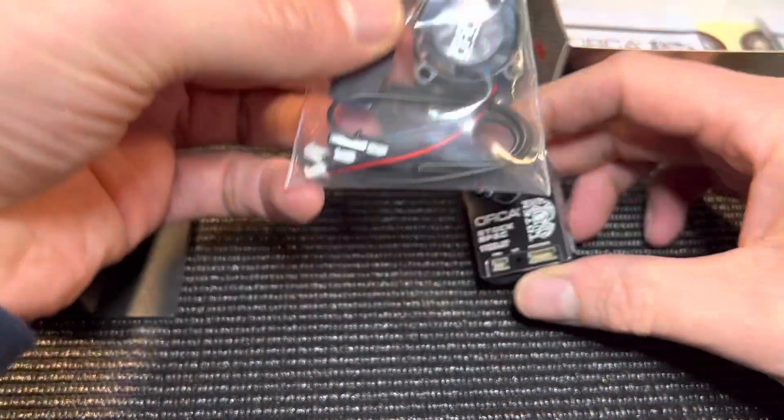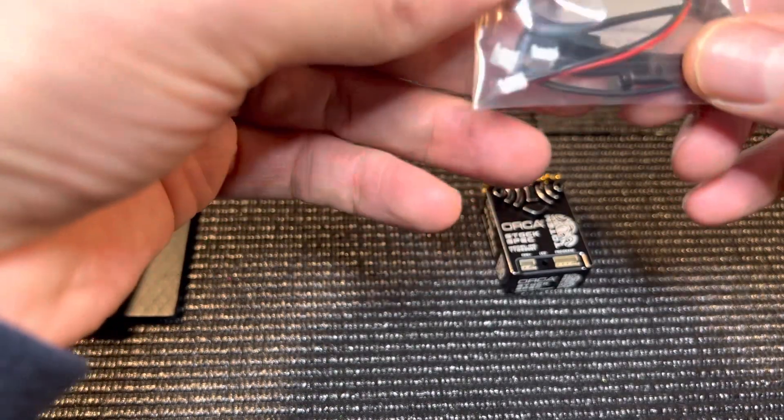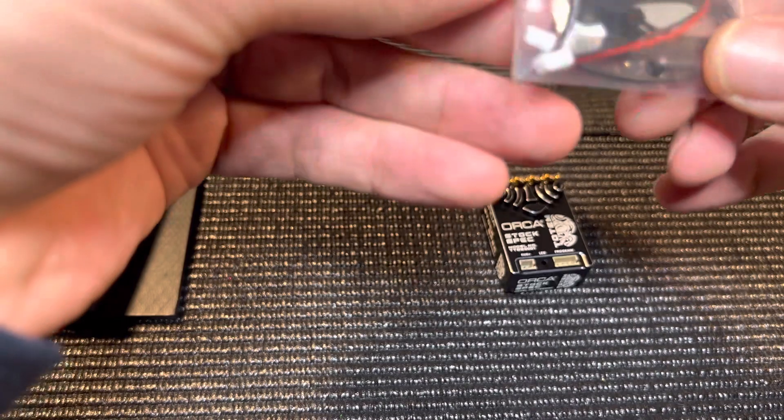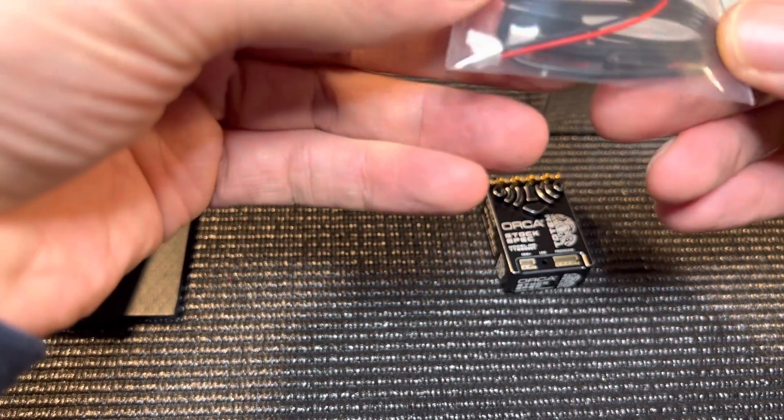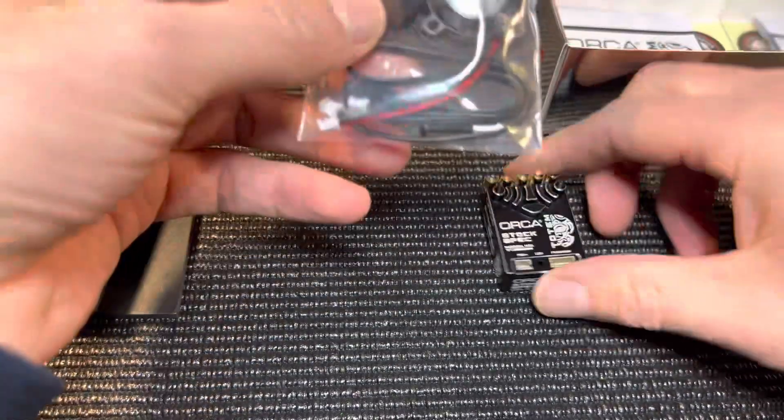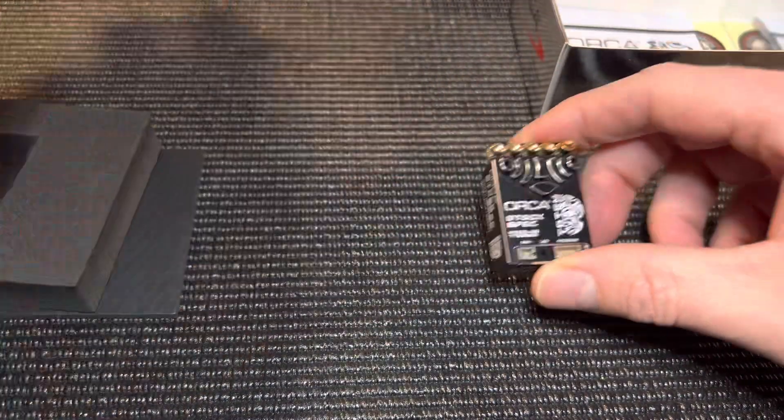You've got a power switch, a couple of screws to attach the fan, and it looks to be the lead to go from the ESC to your receiver. So that's in that little bag there, set that aside.